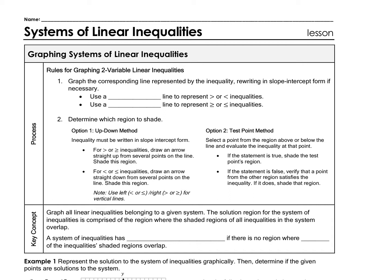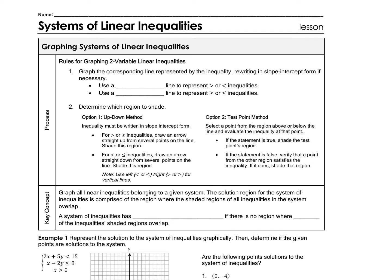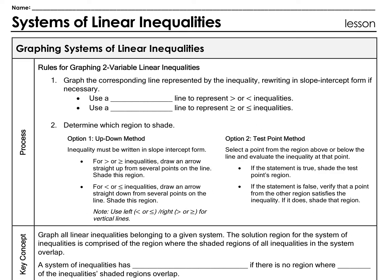The rules for graphing two-variable linear inequalities: graph the corresponding line for the inequality, and rewrite it in slope-intercept form if necessary to get your slope and y-intercept. Use a dotted line when the inequality is strictly greater than or less than (not including the boundary), and a solid line when it includes equal to.